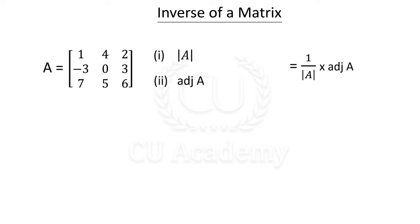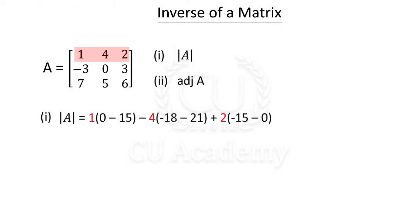In the case of a 3 by 3 matrix, the determinant will be found out. In the matrix, the first row is the reference row. We take one element and multiply the determinant along that row. 1 into 0 into 6 gives 0. Minus 3 into 5 gives 15. Minus 4 into 4. Minus 3 into 7 gives minus 21.